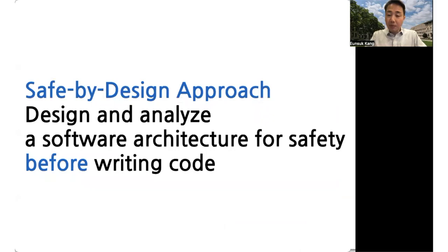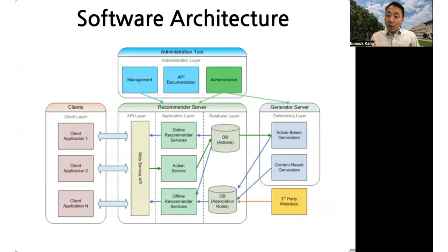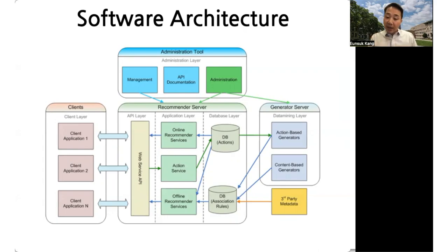Can we apply a similar approach to software? Can we design a software system to be safe from the beginning, instead of building it first and then trying to test it afterwards? One approach, including in our own research, is to start by designing an architecture of the system. A software architecture describes the system in terms of its high-level components and the connections between them — similar to blueprints that architects and civil engineers draw when designing a structure.